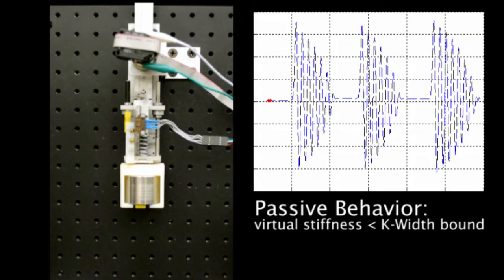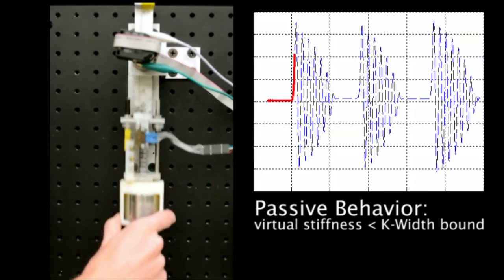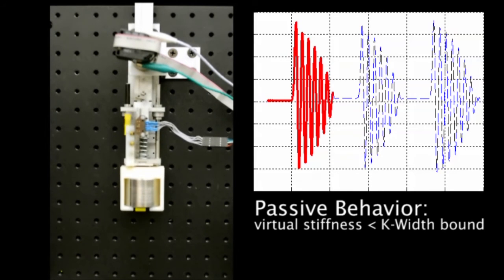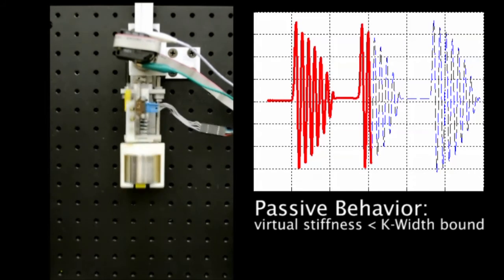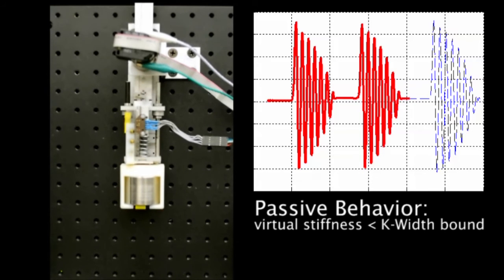During experiments, the series elastic actuator attempts to render a desired virtual stiffness. A malicious user perturbs this SEA system, as shown on the left. If oscillations of the load position decrease in magnitude after this perturbation, we can conclude that the series elastic actuator is passive. The load position is plotted on the right. As you can see, when a virtual stiffness less than our theoretical k-width bound is chosen, the system behaves passively.